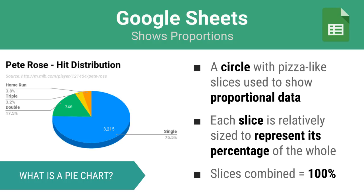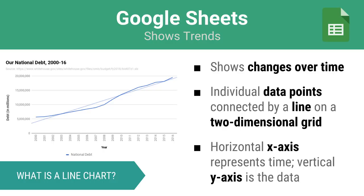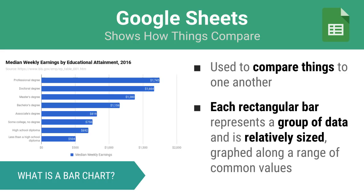Line charts are for showing trends over time. A line chart connects individual data points with a line on a two-dimensional grid. The x-axis normally represents time, and the y-axis is used for the corresponding data that is the subject of the chart. There is also a variation called the area chart, in which the area below the line is filled in. When you want to show a trend, the line chart is the way to go. A bar chart is for showing comparisons. Each bar represents an individual data item, drawn to its relative size alongside other data items, so the viewer can see how they compare. When you want to size things up against one another, the bar chart is the way to go.